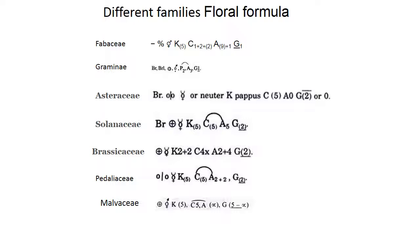Pedaliaceae, or til, has five calyx, five corolla, androecium four — two plus two — and superior gynoecium with two carpels. Cotton or Malvaceae has five calyx, five corolla, androecium five to infinite, and gynoecium five to infinite.